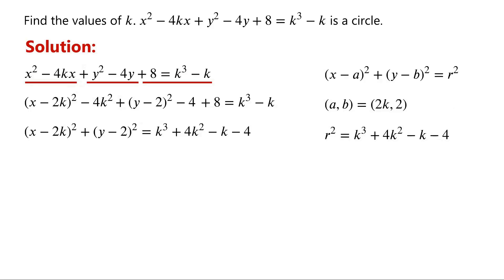We require that r squared is greater than 0. So, k cubed plus 4k squared minus k minus 4 is greater than 0.